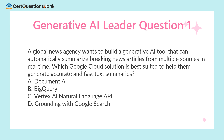A global news agency wants to build a generative AI tool that can automatically summarize breaking news articles from multiple sources in real time. Which Google Cloud solution is best suited to help them generate accurate and fast text summaries? A. Document AI. B. BigQuery. C. Vertex AI Natural Language API. D. Grounding with Google Search.